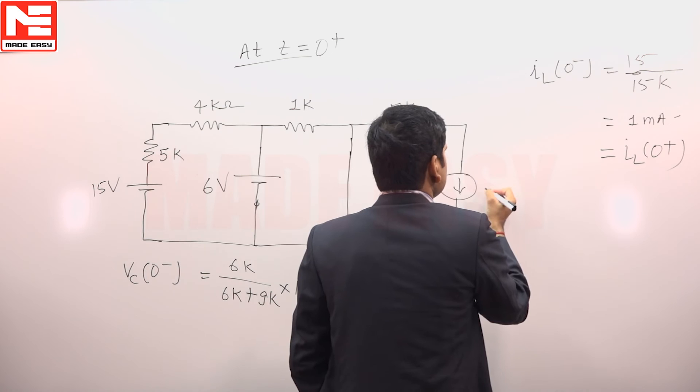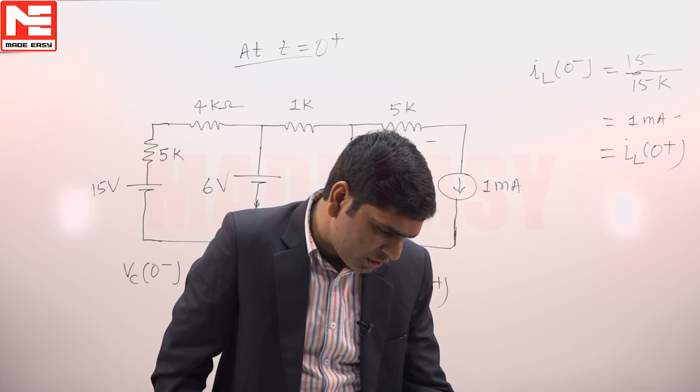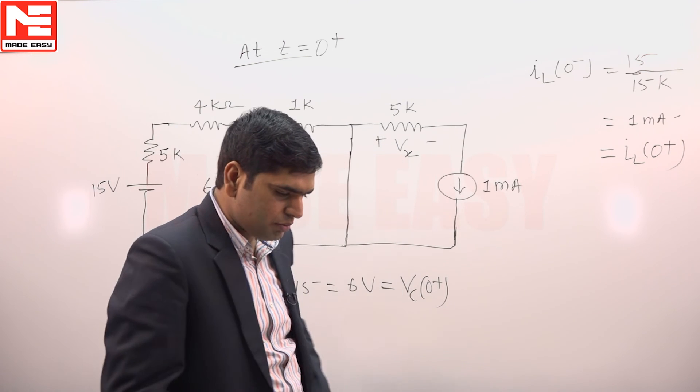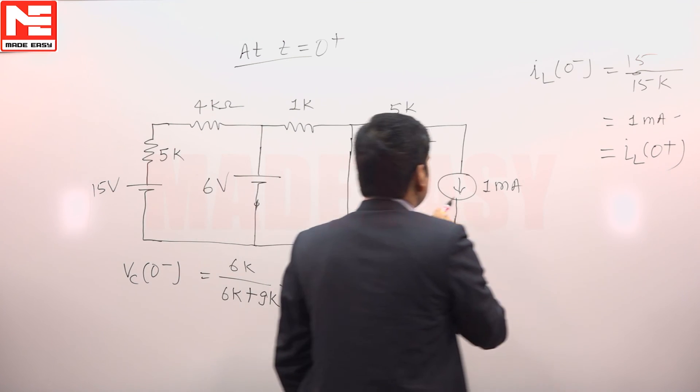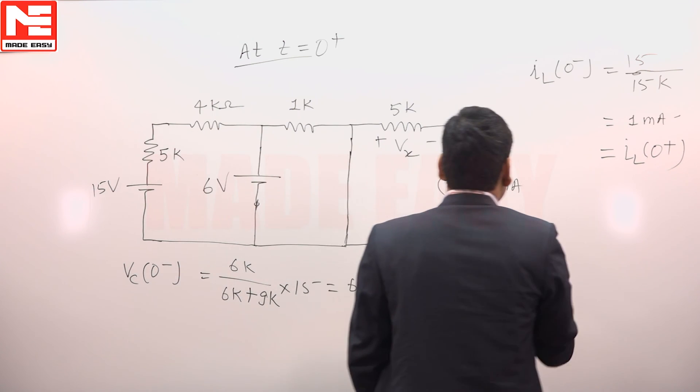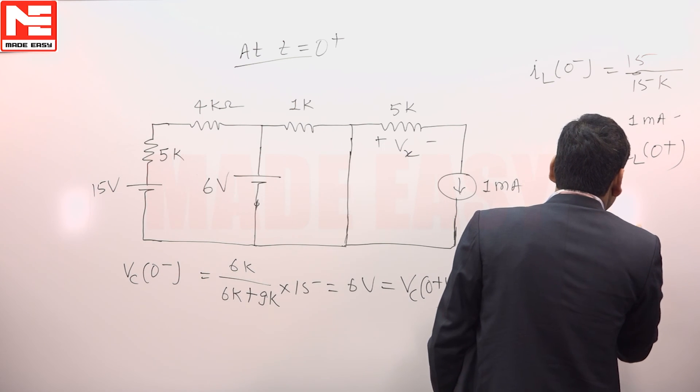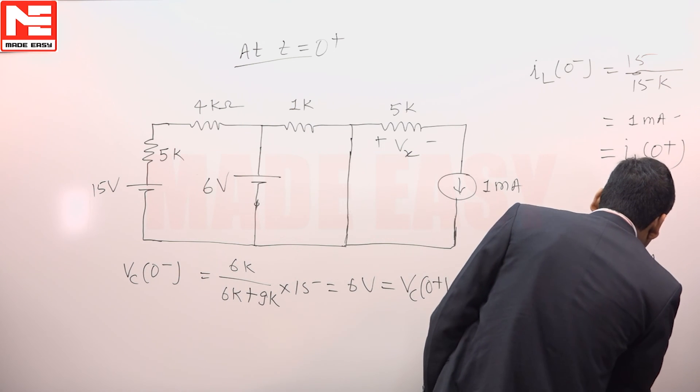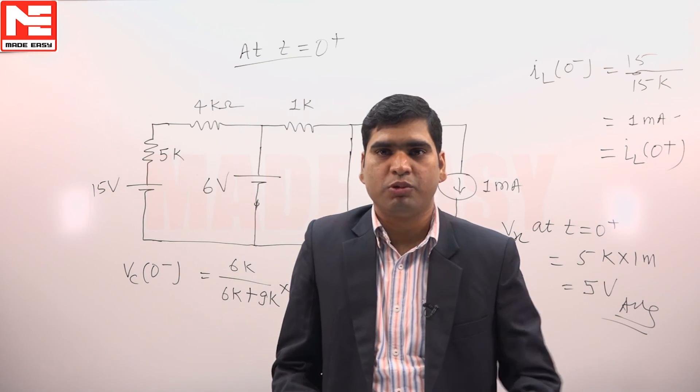This is 1 milli ampere. What we need to calculate? We need to calculate the voltage Vx across 5 kilo ohm resistor. The same current 1 milli ampere is flowing across this. Vx at T is equal to 0 plus is equal to 5 k into 1 milli is equal to 5 volt, that is our answer. Answer for this question is 5 volt.